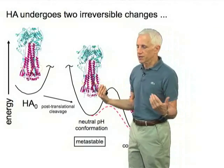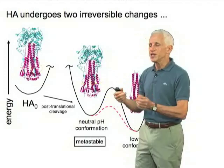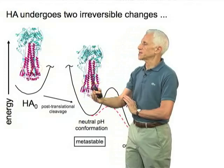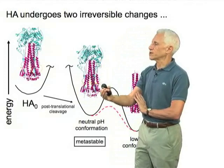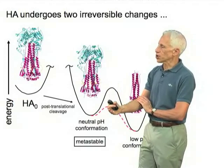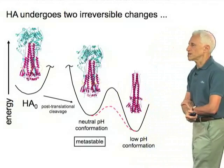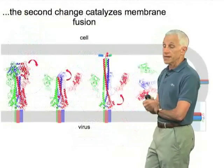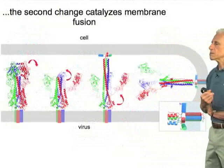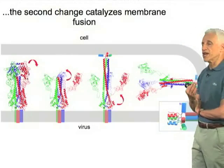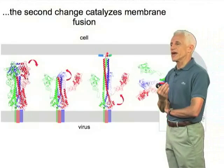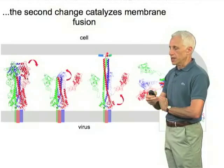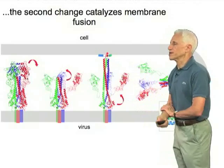It doesn't go backwards because there's no way of re-knitting that peptide bond, since this structure is actually not the lowest free energy state. It's just that there's a very high barrier here that's lowered when protons bind. And it is that second change and the free energy recovered from that second conformational change that is coupled to the process of membrane fusion.